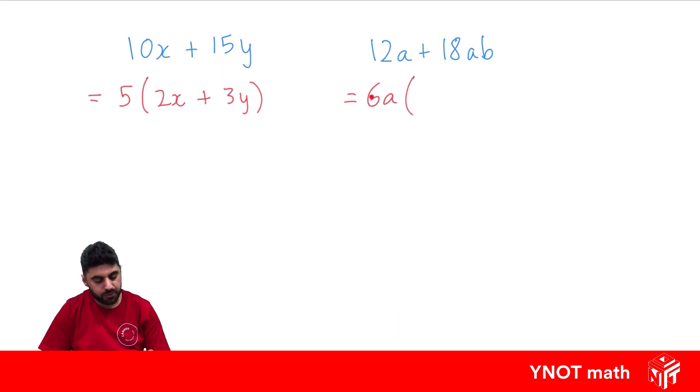Now, what do we need to multiply by 6a to get us back to 12a? We're going to need to multiply by 2, because 6a times 2 is going to give us 12a. Plus, because we have a plus sign.